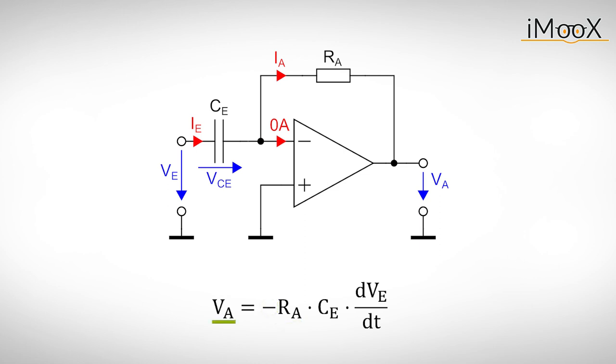The output voltage is proportional to the derivative of the input voltage and we can scale it with the product RA times CE.